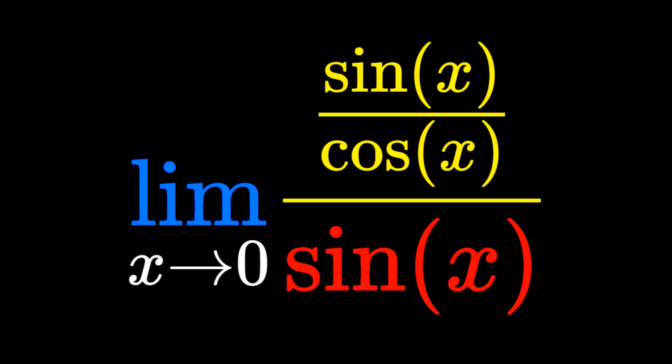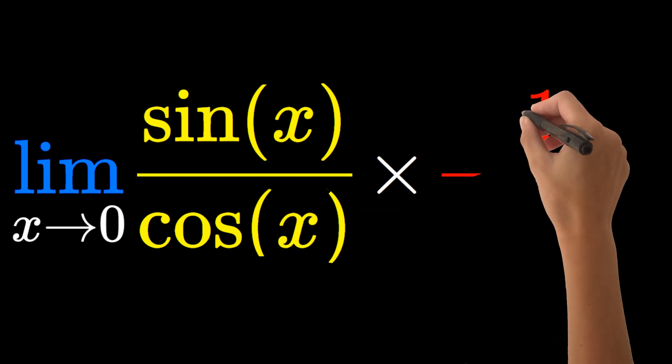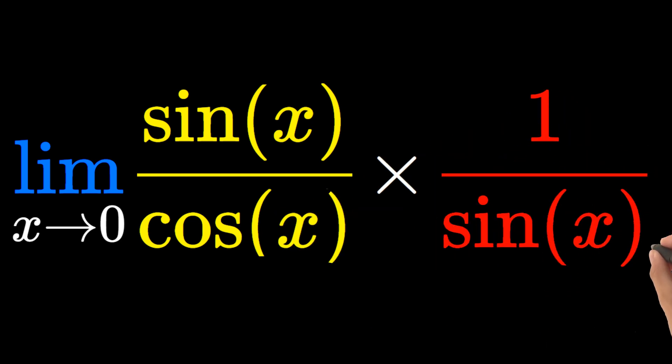We're rewriting the numerator only at this step. Now we get limit as x goes to 0 of sine x over cosine x times 1 over sine x. We've used the keep change flip principle of fractions here.